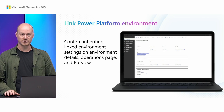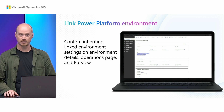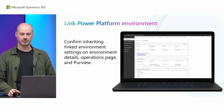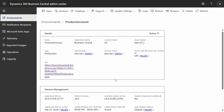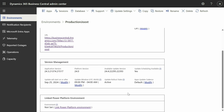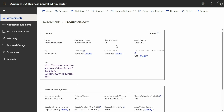These settings are administered in the Power Platform Admin Center, and for them to apply to your Business Central environment you have to link your Business Central environment to a Power Platform environment. To do that, you navigate to the environment details page in the Business Central Admin Center, and there you can use this setting here to link your environment to any PPAC environment.